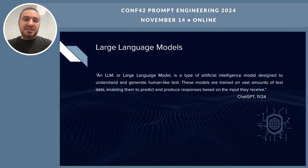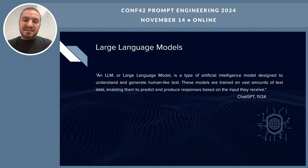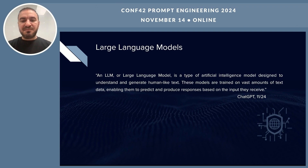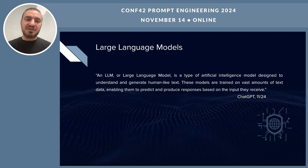Let's start with the definition of large language models. I thought it's better to ask one of the LLMs to see how they define itself. Basically, it says LLMs are a type of AI model designed to understand and generate human-like text. These models are trained on a vast amount of data, which enables them to predict and produce responses based on the inputs they receive. Two key phrases to keep in mind: generate human-like text and trained on vast amount of data. We'll come back to these to understand how they impact the outcome of LLMs.